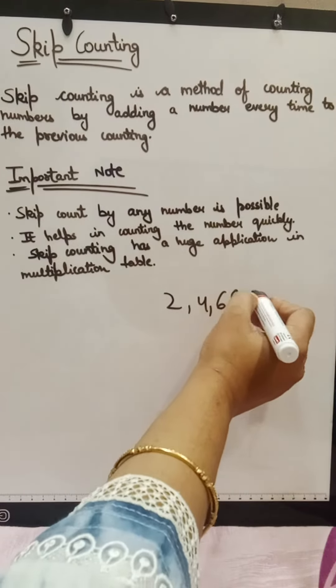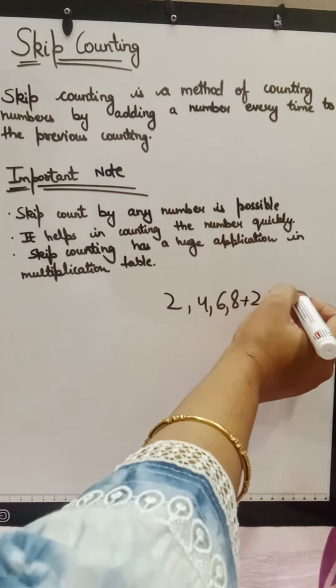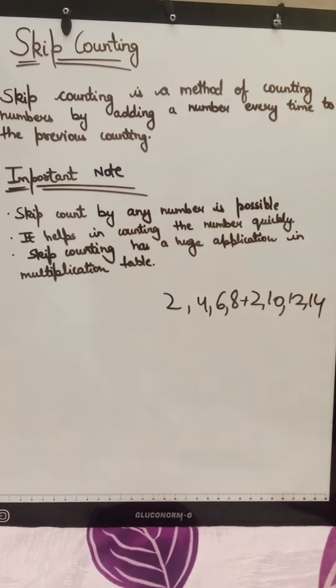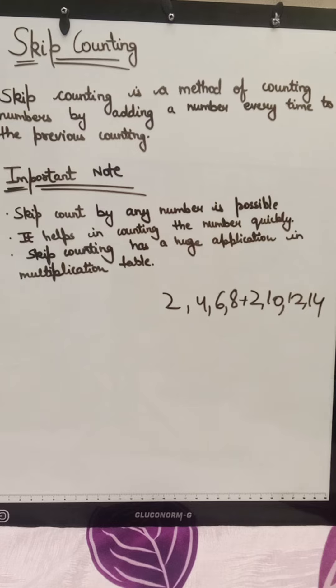Like 8 plus 2 is 10, 10 plus 2 is 12, 12 plus 2 is 14. So this is how we should do skip counting.